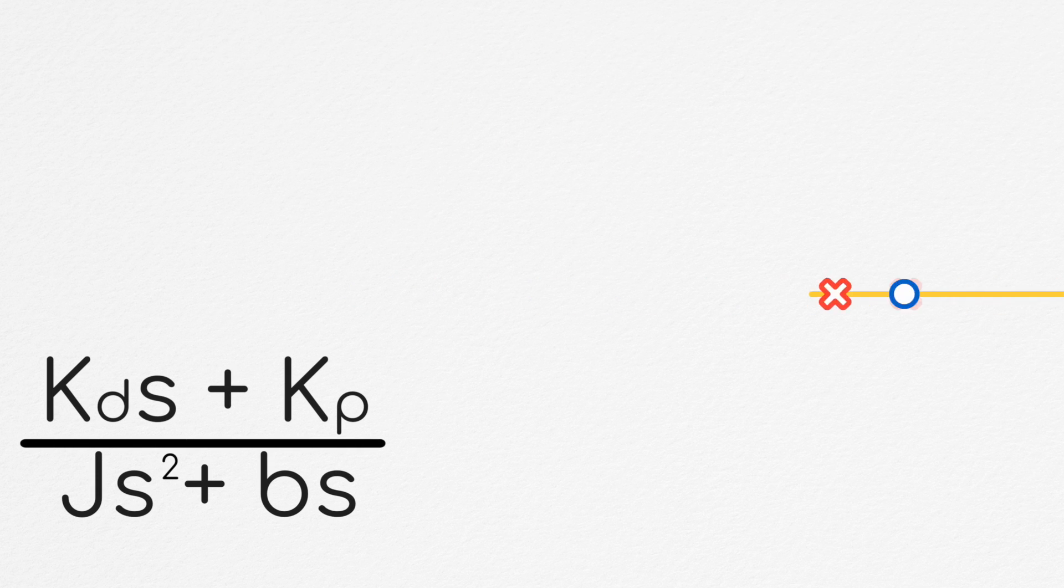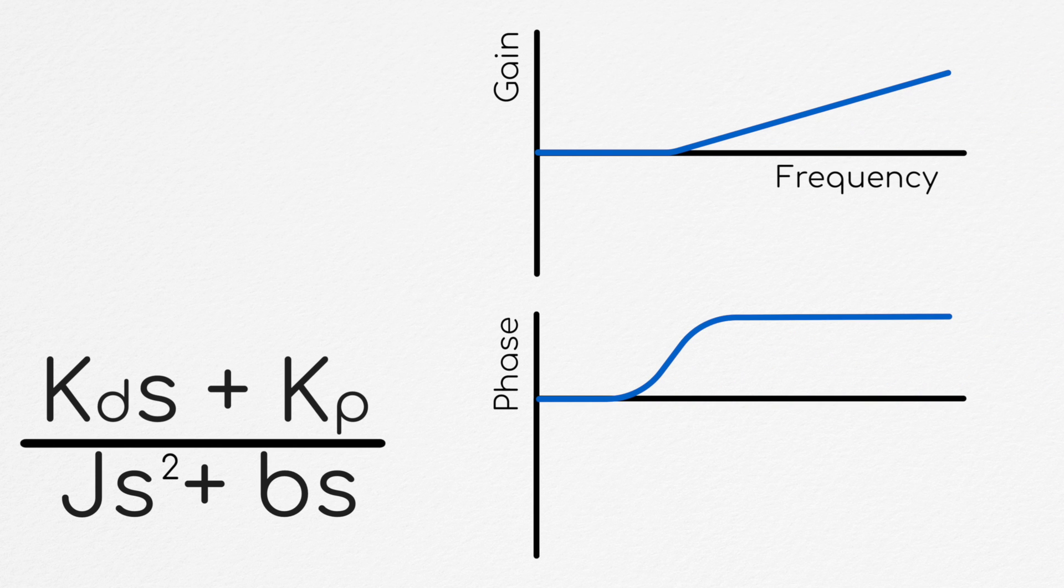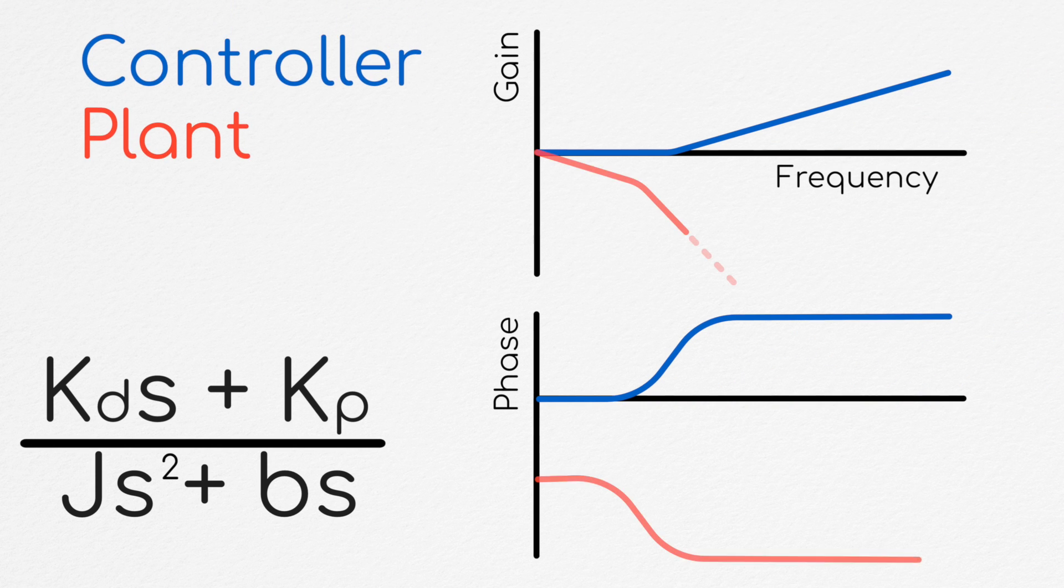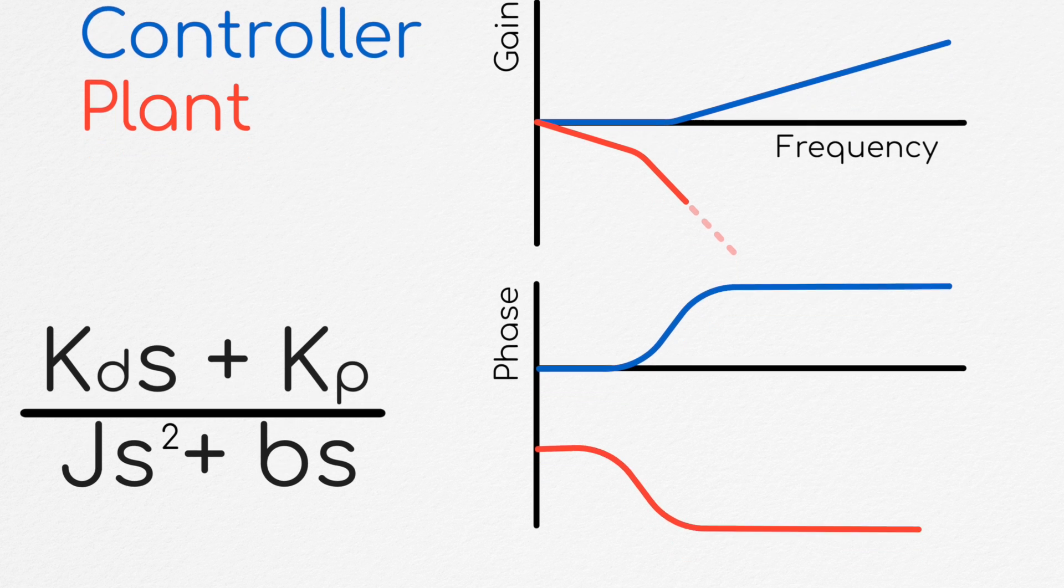Adding the zero via the damping controller will amplify high-frequency inputs to the system, which is generally not desired. However, since torque to position is a second-order system, it's almost never going to be an issue in position servos.